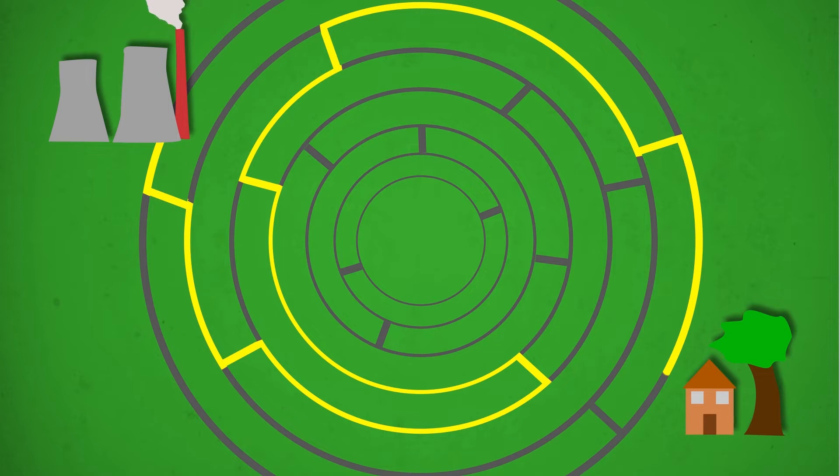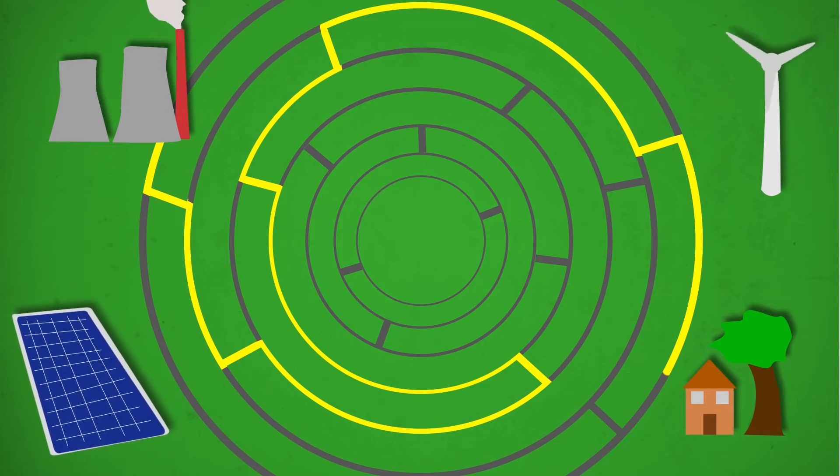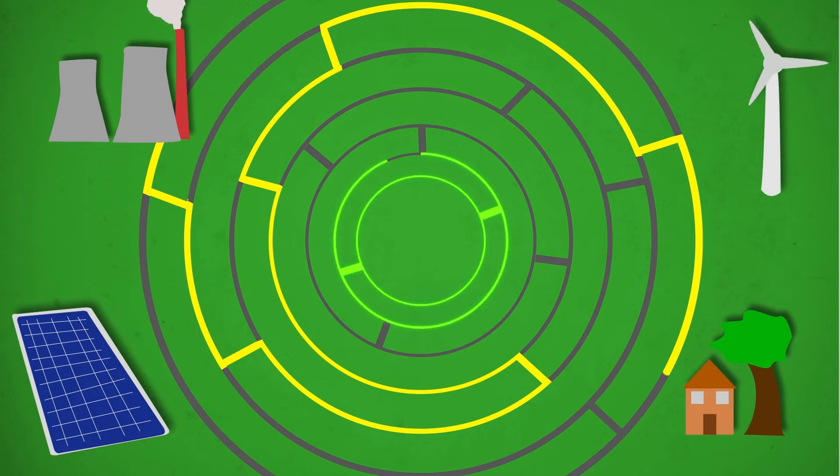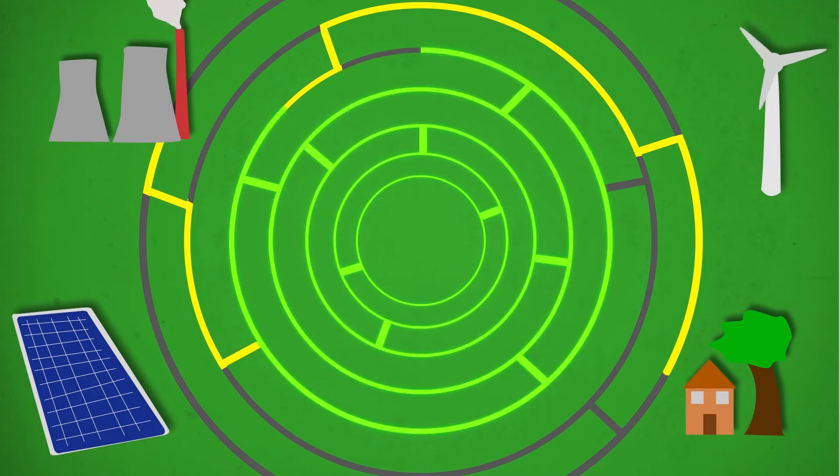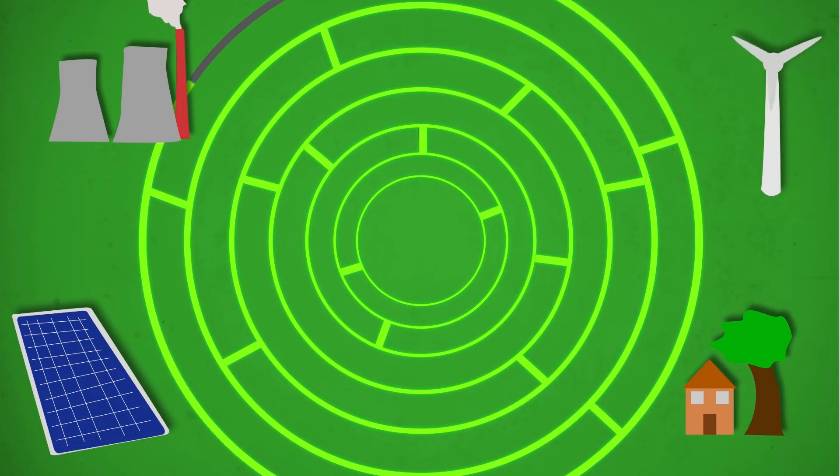This decentralised model allows for electricity to come from multiple, smaller sources, combining wind farms, solar panels and other renewables with traditional fossil fuels to lower the grid's overall carbon footprint, and allow for a smoother transition into 100% renewable energy.